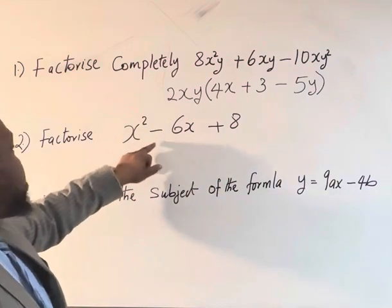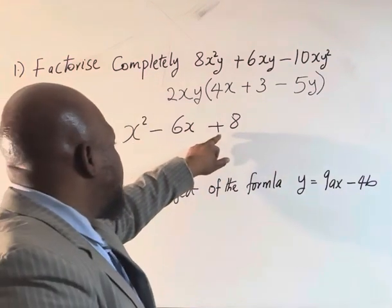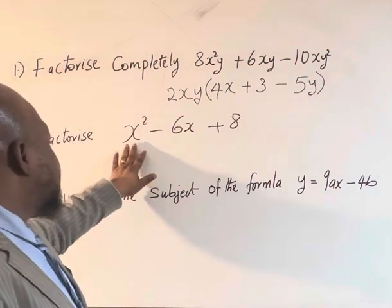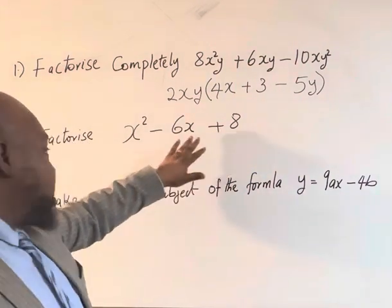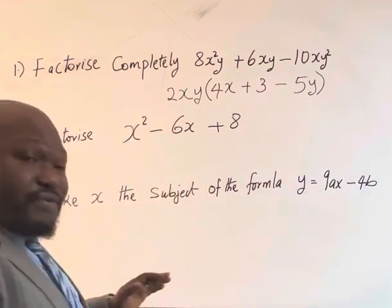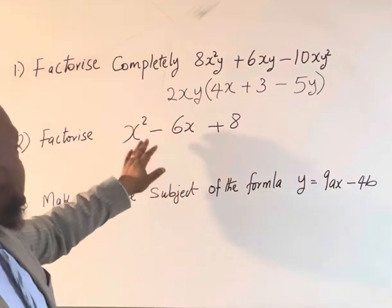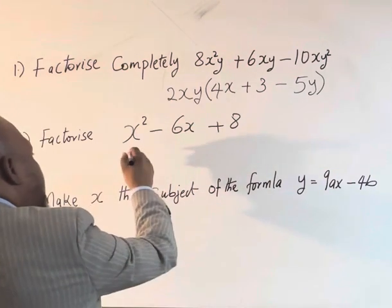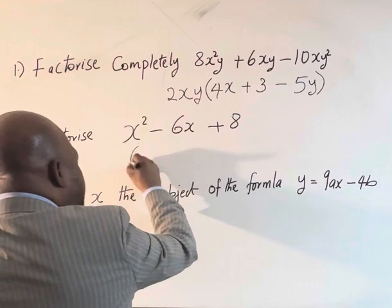The next one is s squared minus 6s plus 8. There are different ways of factorizing a quadratic equation. This is not an equation, this is an expression. There are different ways of factorizing such expression. What I normally do is you can create two brackets.